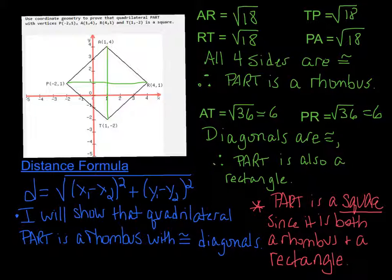Back to the lengths of the diagonals. AT is radical 36, which is really 6, and PR is radical 36 also, which is 6. So the diagonals are congruent, making it a rectangle.